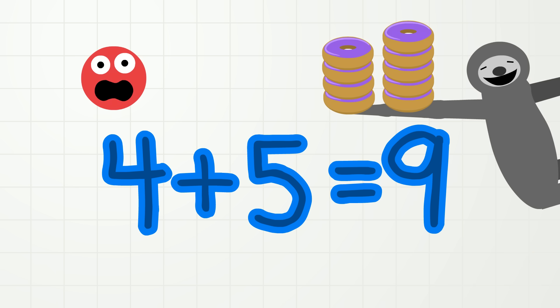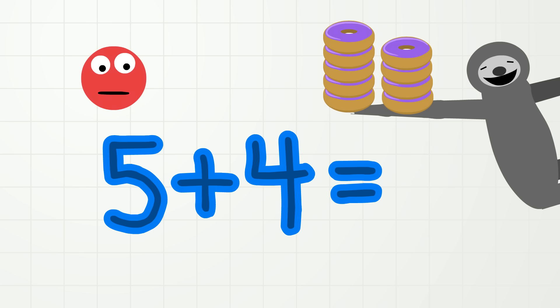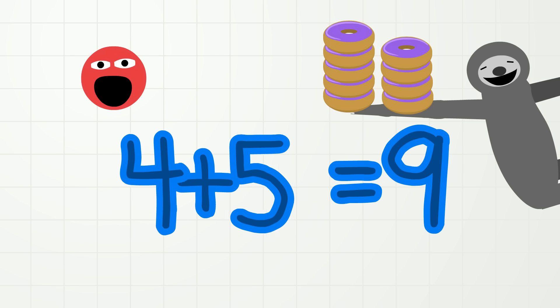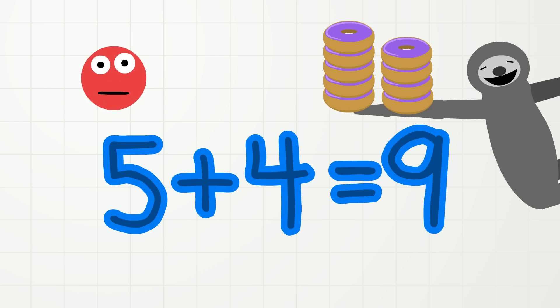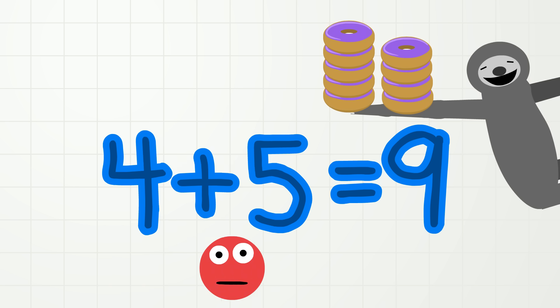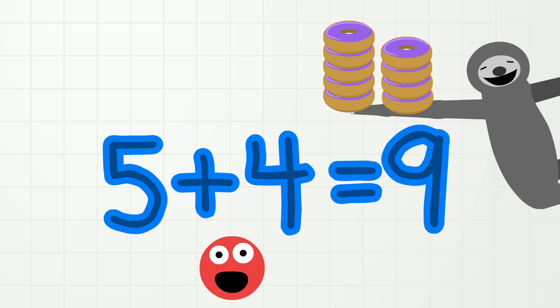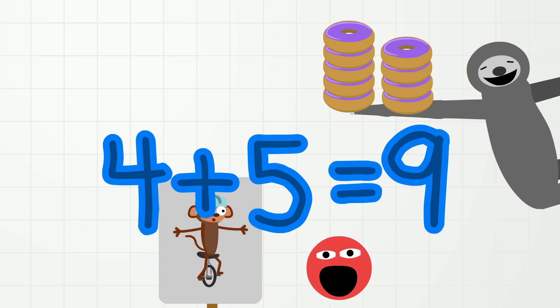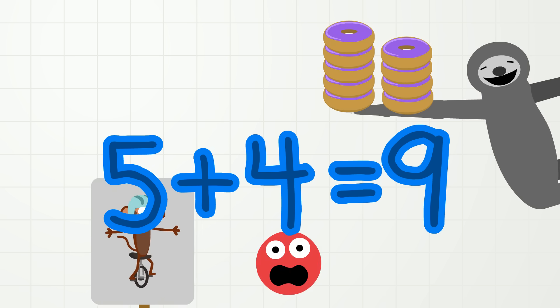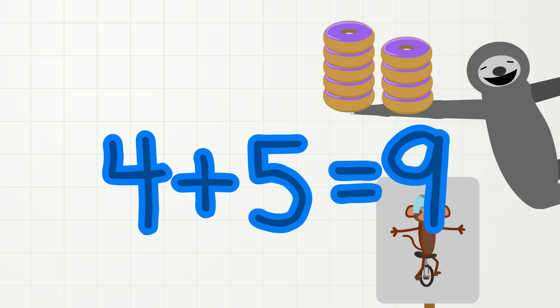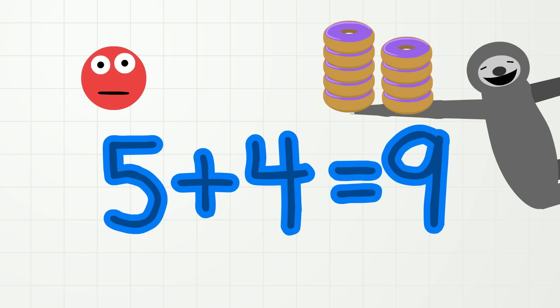So I have a question! What do you think happens if we switch the four and the five like this? Now how many donuts do we have? That's right! The same number of donuts! Nine donuts! So, four plus five equals nine! And five plus four also equals nine! Four plus five equals nine! And five plus four equals nine! Okay, that's enough!